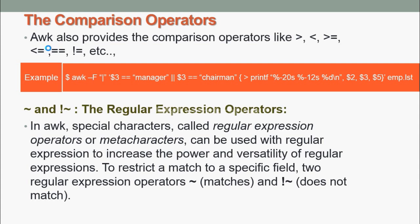awk -F: '$3 == "manager" || $3 == "chairman"' {printf ...} emp.lst. The above command looks for two strings, manager and chairman, only in the third field. The second string is attempted only if the first match fails. That is, if it fails to search manager in the third field, then only it will check for chairman.